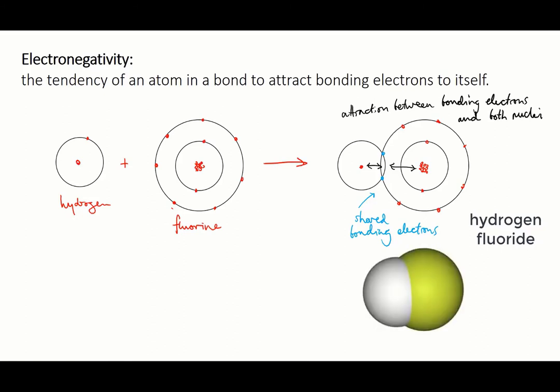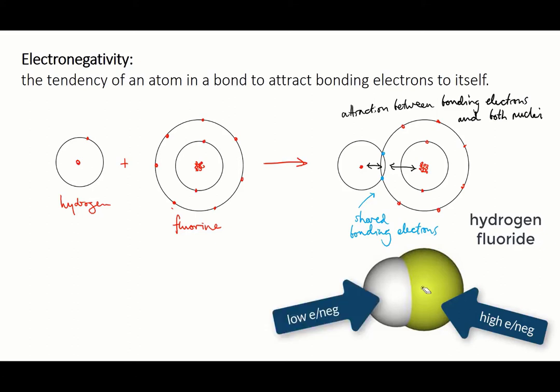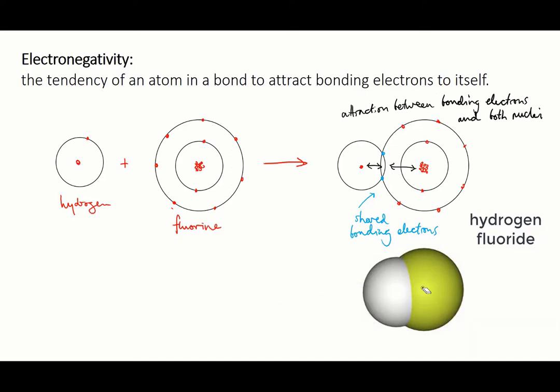This hydrogen fluoride molecule has two bonding electrons that hold the atoms together. The fluorine atom has significantly higher electronegativity than the hydrogen, and that means that those two bonding electrons spend more time close to the fluorine atom than they do to the hydrogen. The effect of this behaviour is that the fluorine atom effectively has a partial negative charge. The electrons spend more time around it.